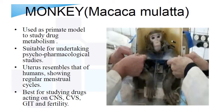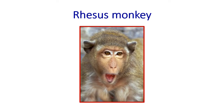Monkey — the scientific name is Macaca mulatta. They are used as a primate model to study drug metabolism and are suitable for undertaking psychopharmacological studies. The uterus resembles that of the human and shows a regular menstrual cycle. They are best for studying drugs acting on the CNS, CVS, gait, and fertility. This is the rhesus monkey.